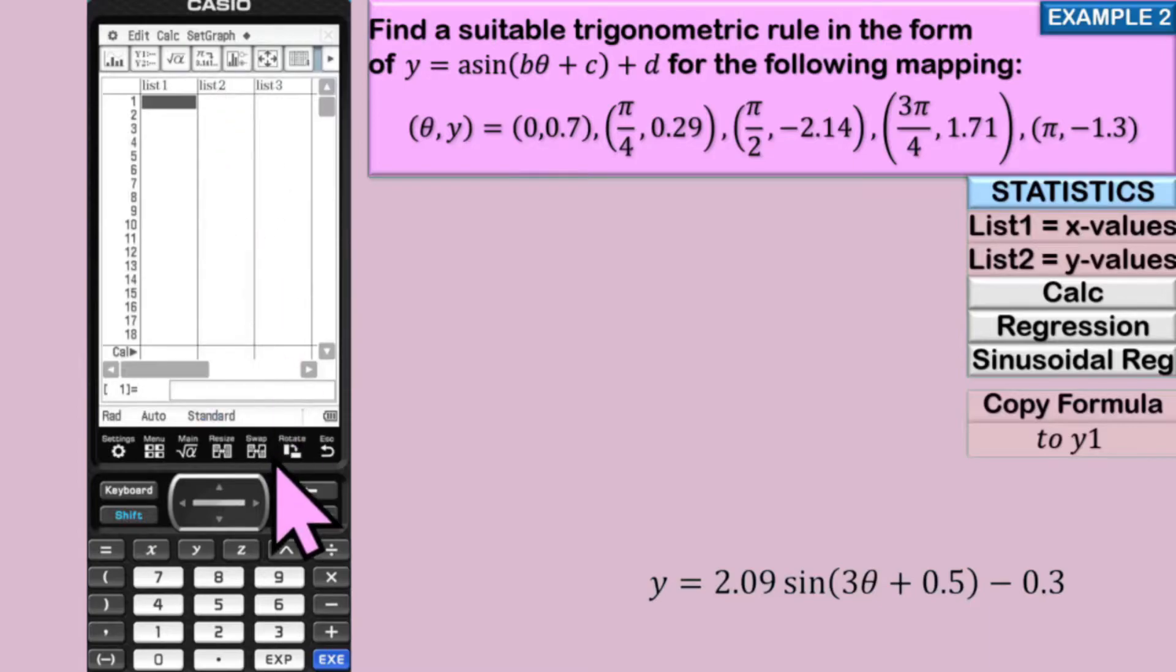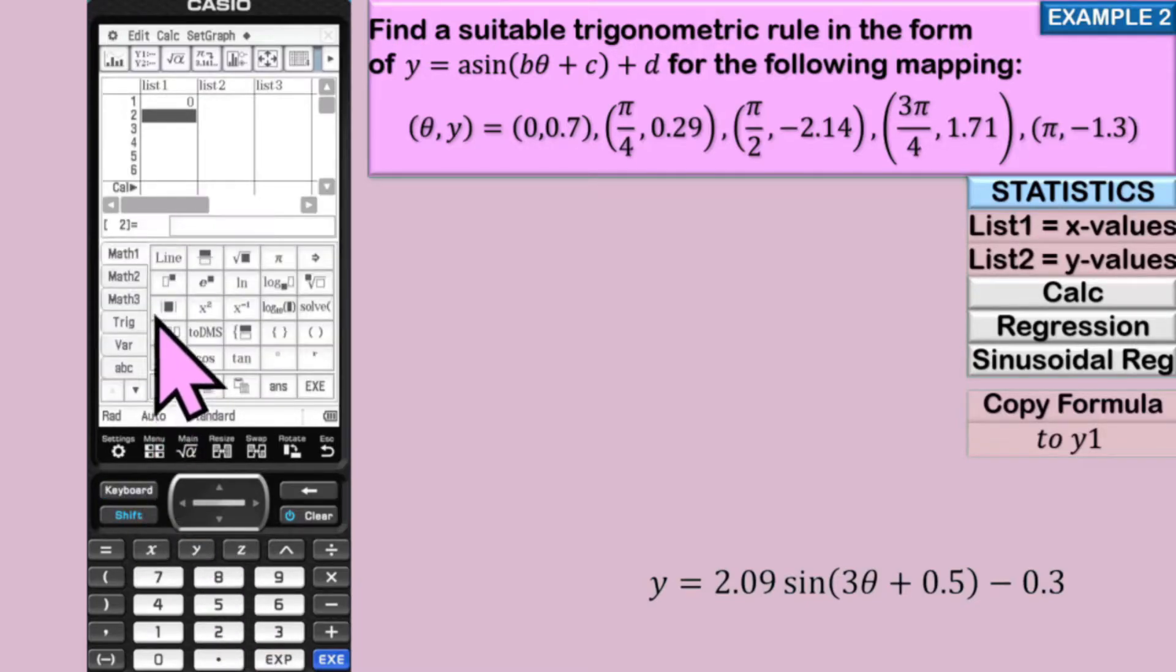And in list one, we put in all our x values. So zero, enter. Then we have pi on four. And pi is in keyboard over here in math one. There you go. Pi over four. Enter.